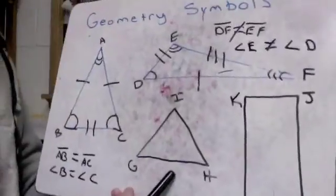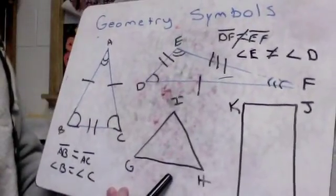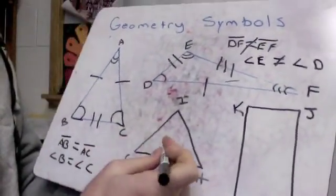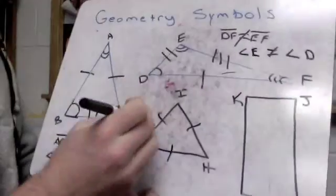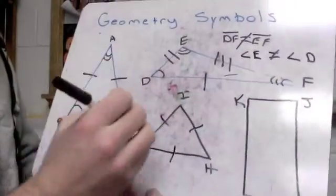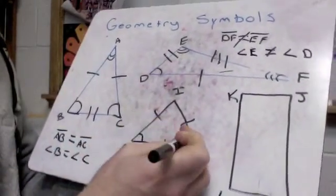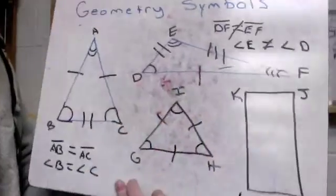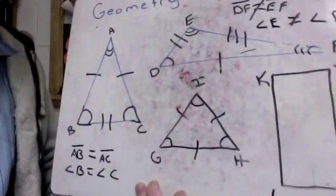Down here this is an equilateral triangle. You're probably going to see one line through all of them, just meaning they're all the same. And you might see one arc because all those angles are going to be 60 degrees — they're all going to be the same.